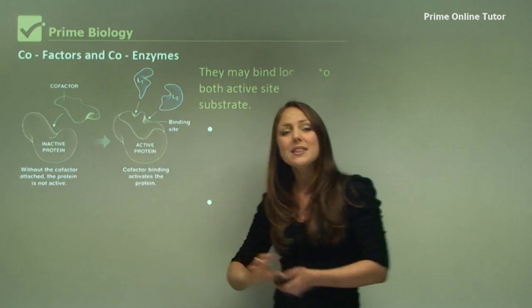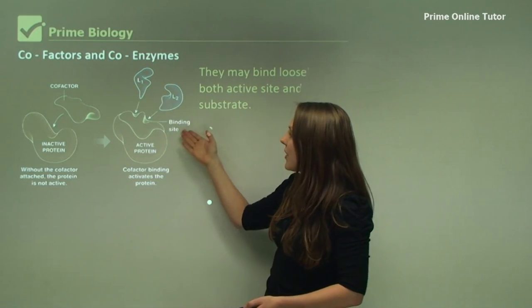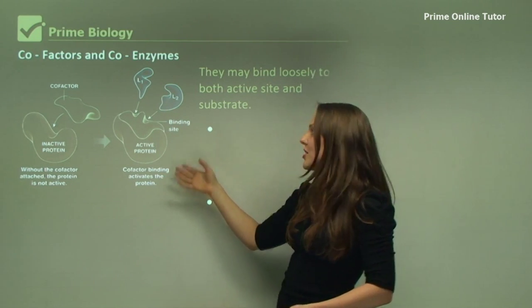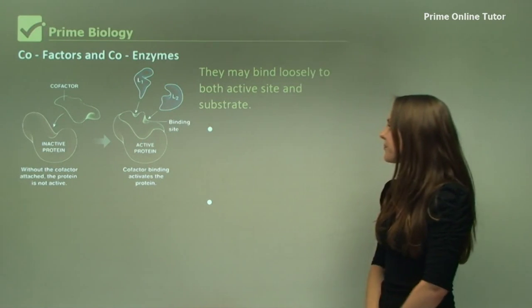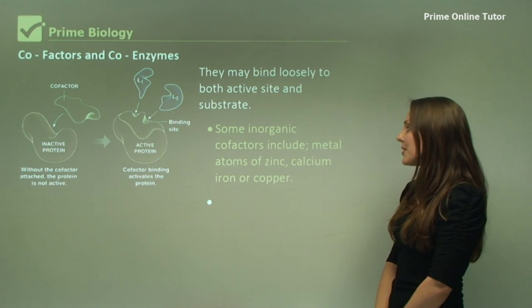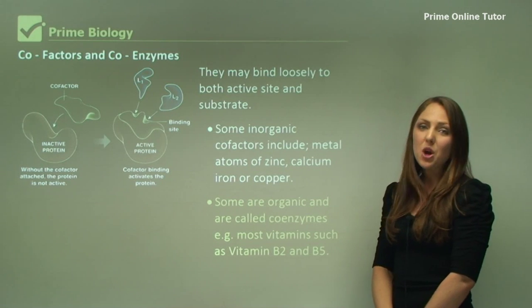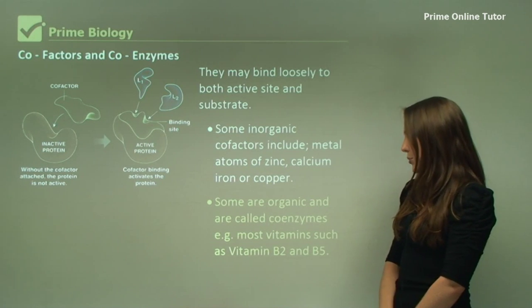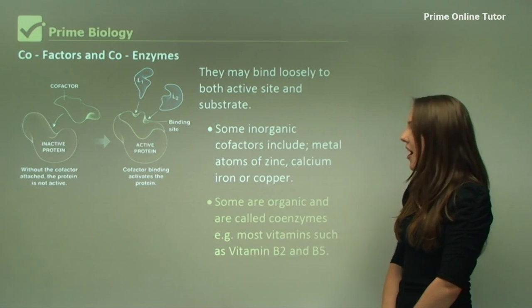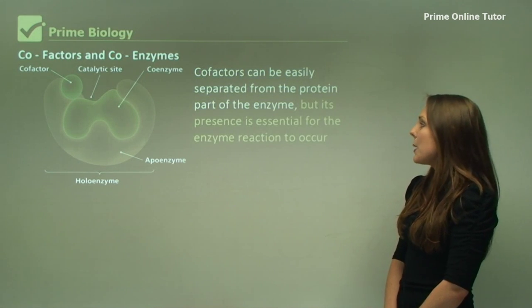Without the cofactor, the enzyme will not be able to bind to the substrate. Here we have a cofactor that's bound to the enzyme and it's able to function and bind with the substrates. Inorganic cofactors include metal atoms of zinc, calcium, iron, or copper. Organic coenzymes include most vitamins, such as vitamin B2 and vitamin B5.